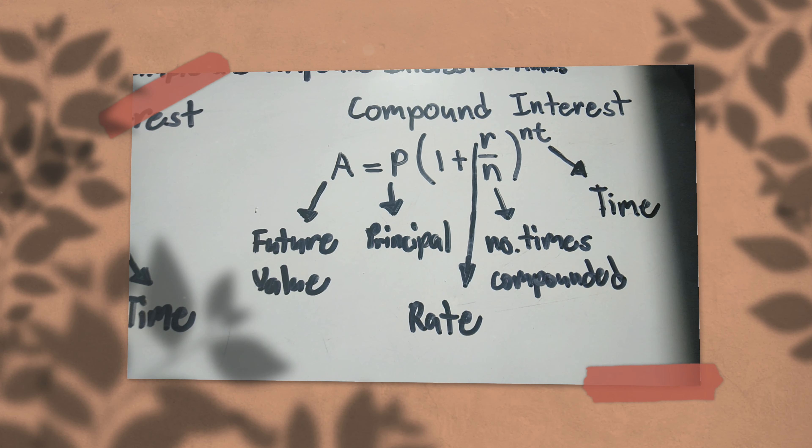Then the T, the time - you multiply this by the time, like for 3 years, 4 years, 5 years. That's it.